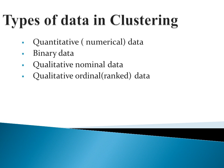The types of data in clustering. There are four types of data in clustering. The first one is quantitative or numerical data. The second one is binary data. The third one is qualitative nominal data. And finally, qualitative ordinal or rank data — that is, data based on priority value.